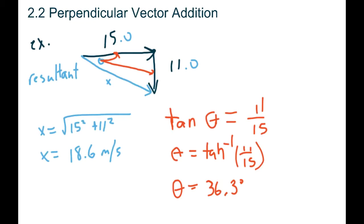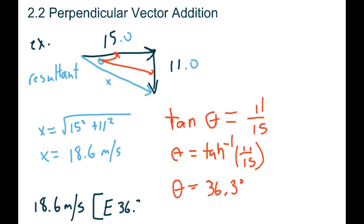There's one more step - you have to write your answer in final vector form. So we'd have 18.6 meters per second, and then state the direction. Our angle was 36.3 degrees. We went east first, then down at an angle of 36.3 degrees towards the south. So that would be one acceptable answer.